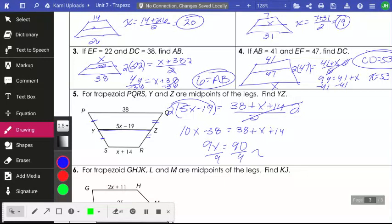Divide both sides by 9 and I get X is 10. It didn't ask for X though. It asked us to find YZ. YZ is this equation here, 5 times 10 minus 19. So we have 50 minus 19. So we have YZ is equal to 31.